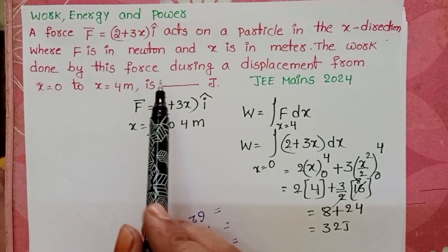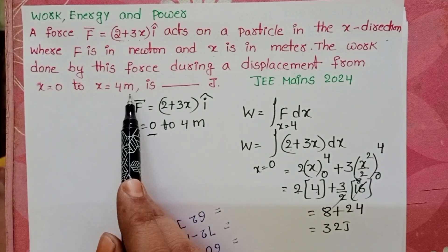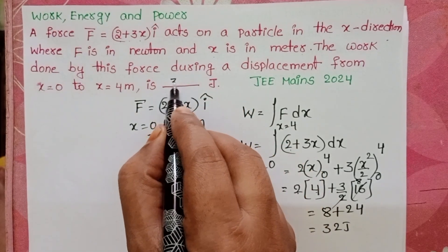The work done by the force during the displacement from 0 to 4 meters is 32 joules.